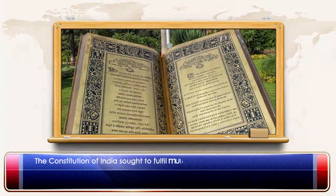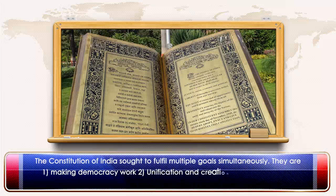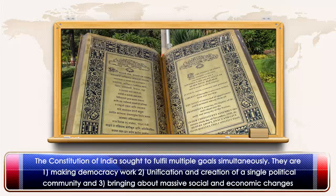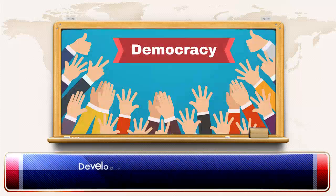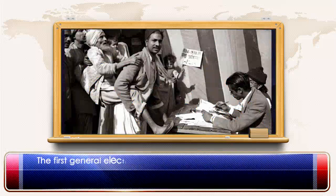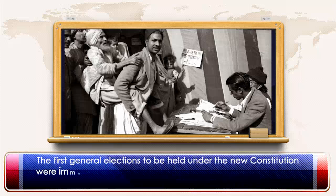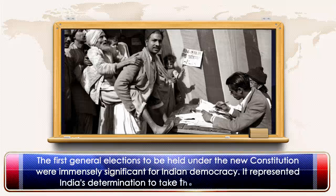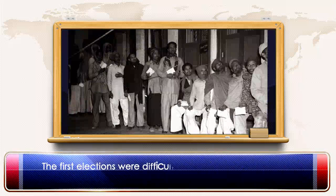The Constitution of India sought to fulfill multiple goals simultaneously: making democracy work, unification and creation of a single political community, and bringing about massive social and economic changes. Development of goals, unity, and integrity should not come at the cost of democracy. The first general elections held under the new Constitution were immensely significant for Indian democracy, representing India's determination to take the path of democracy.